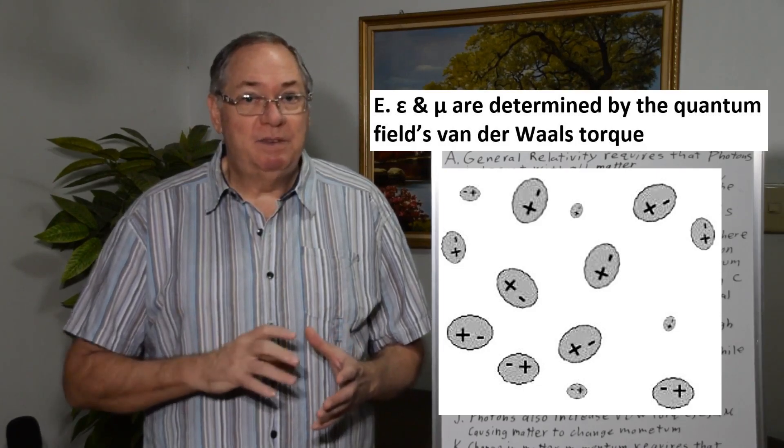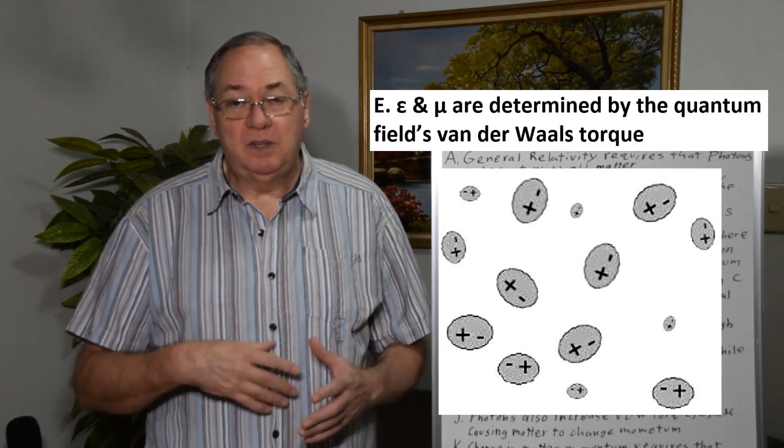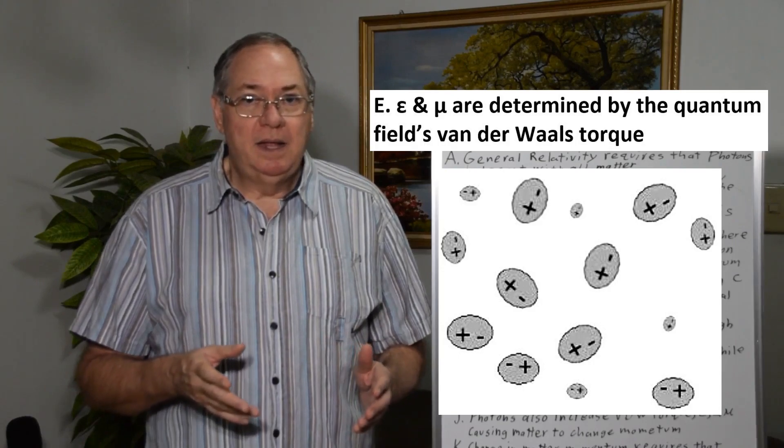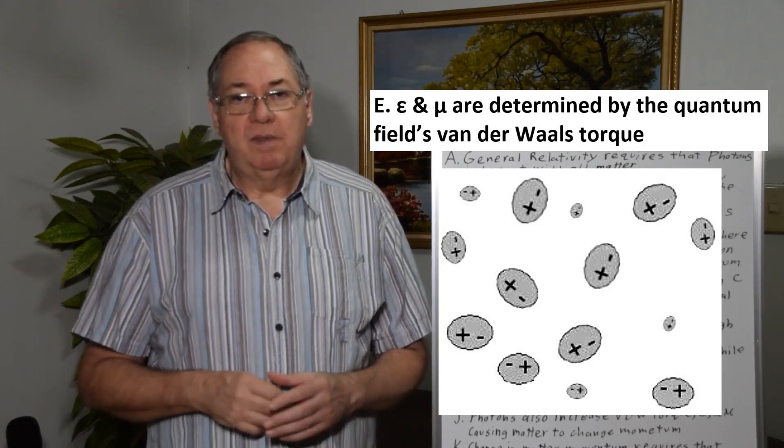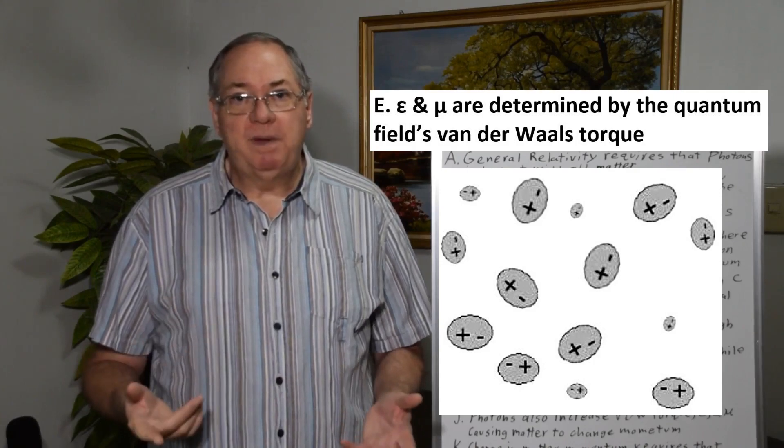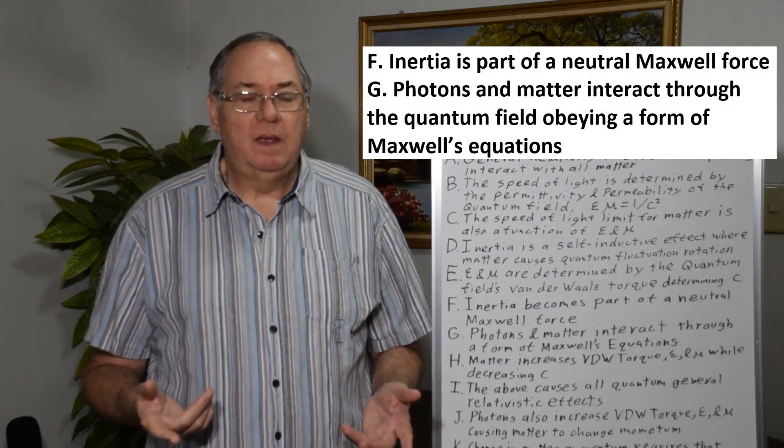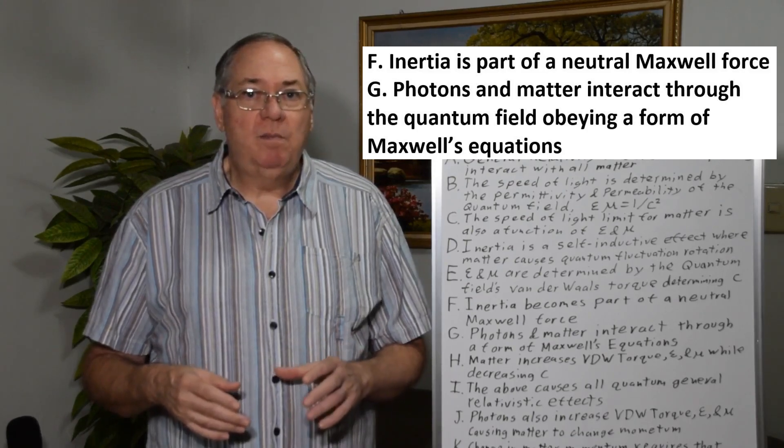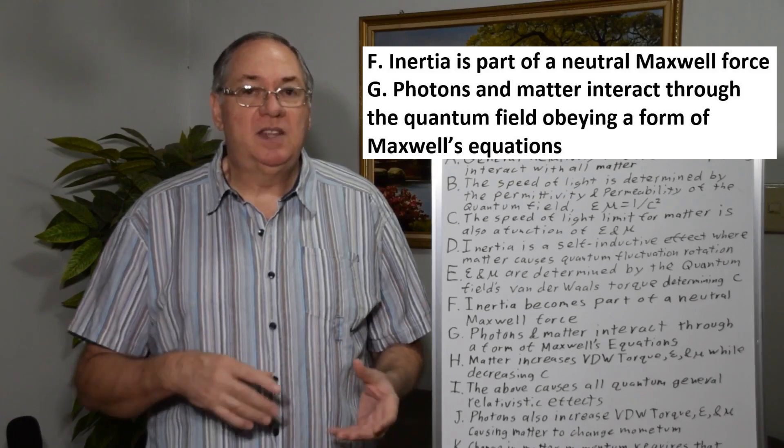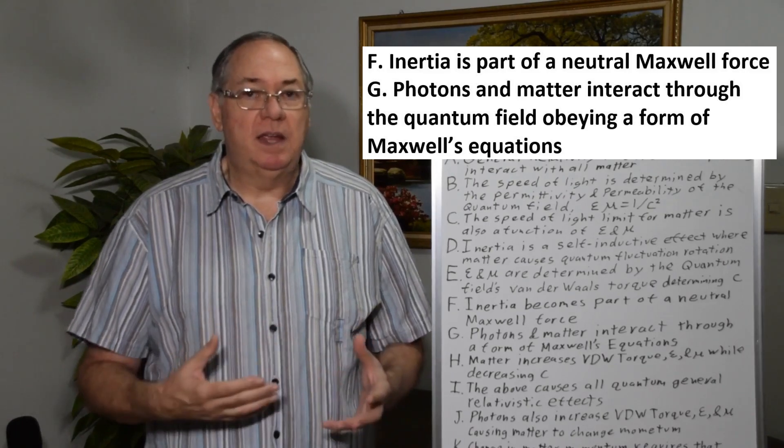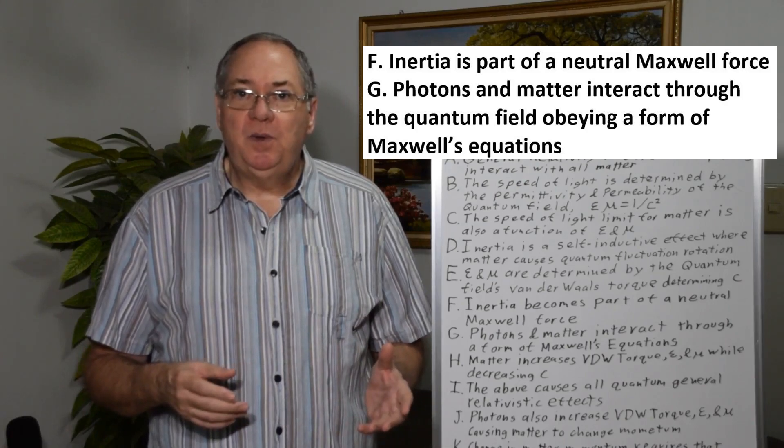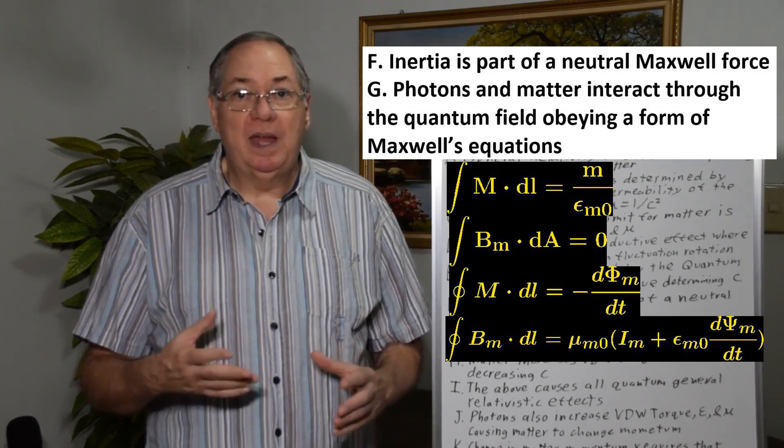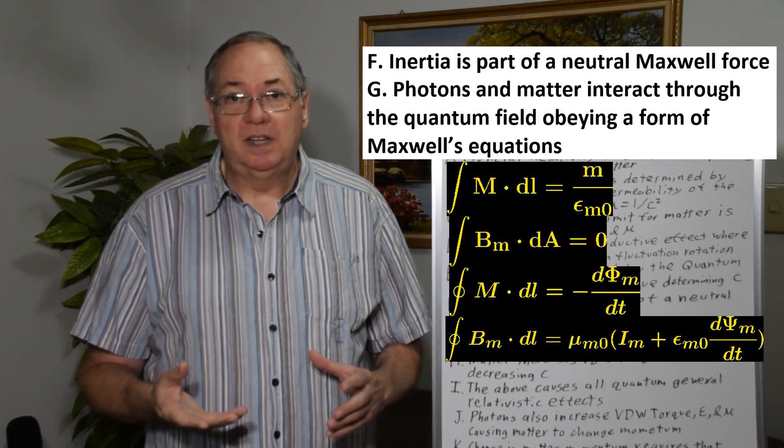And it resists forward motion as well. So both linear and angular motion are determined by the Van der Waals torque of the quantum field, which determines the speed of light limit. And then stepping back to inertia, if you have a form of inertia that is like self-induction, an inductive type, that expands into a Maxwell force, very much like the electromagnetic force, but without electric charges. It's electrically neutral.